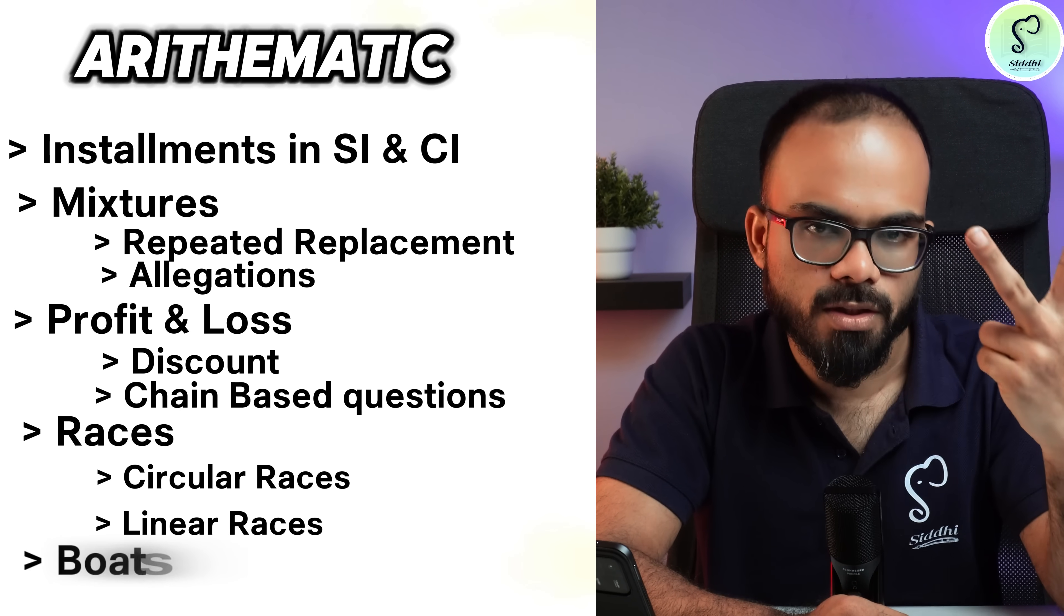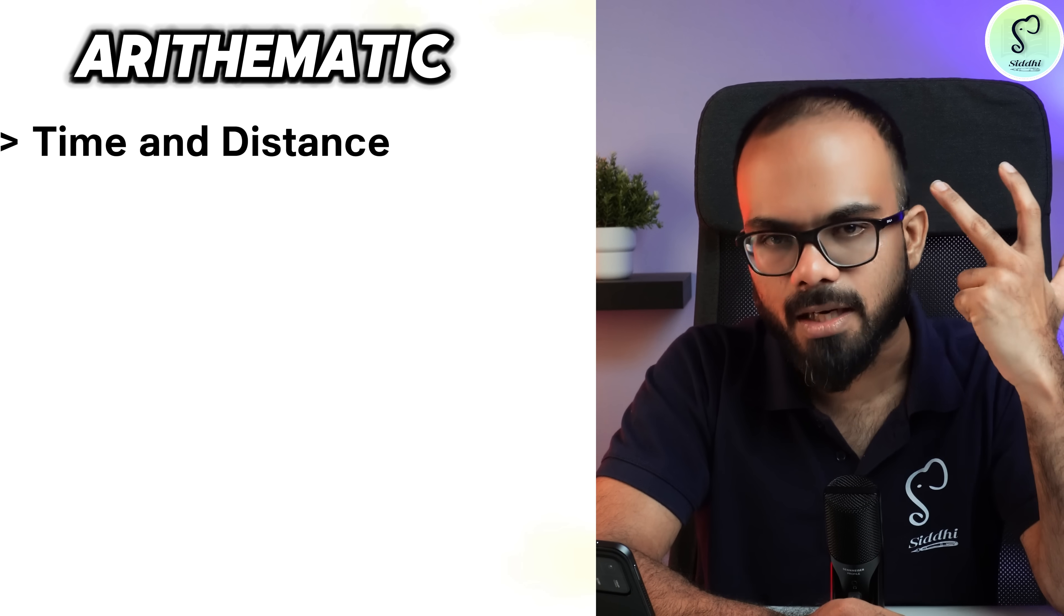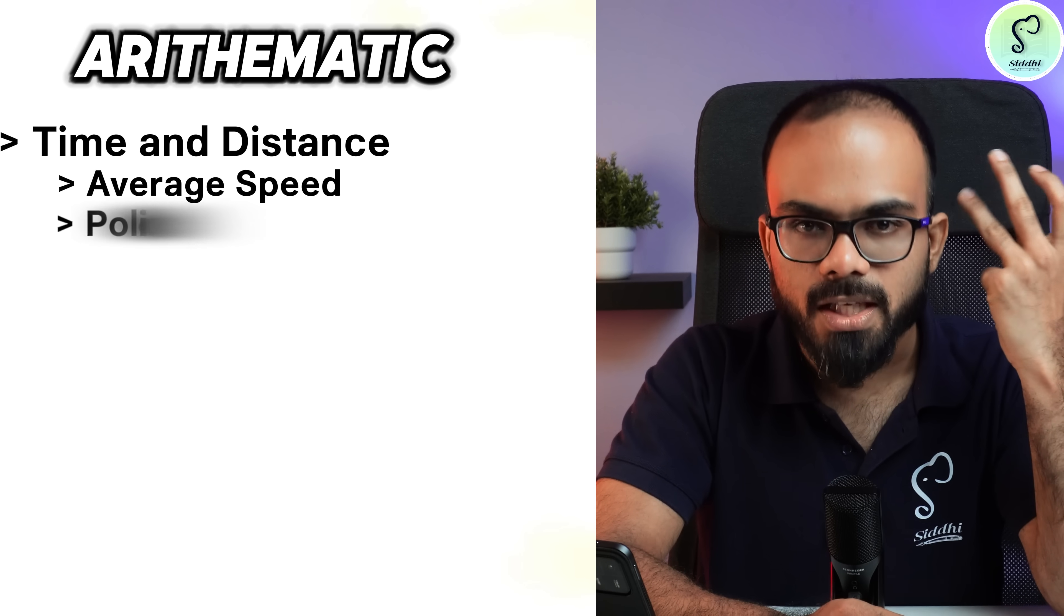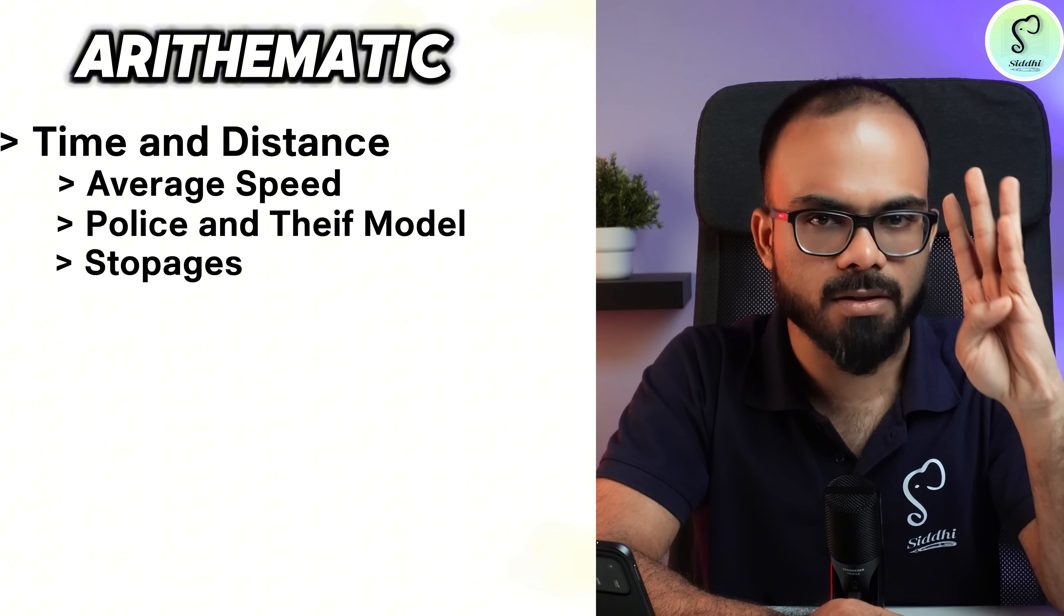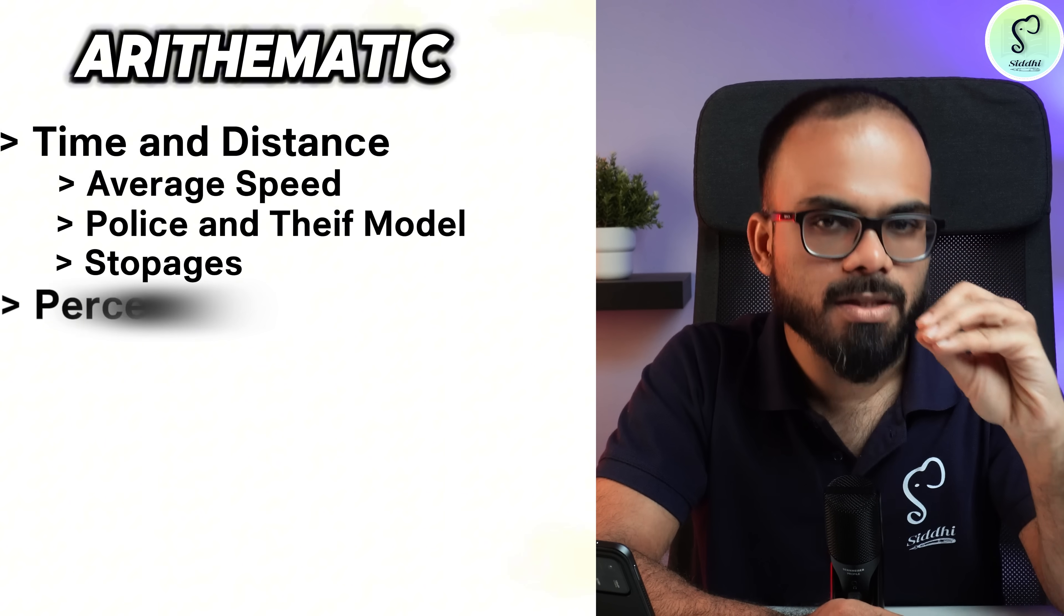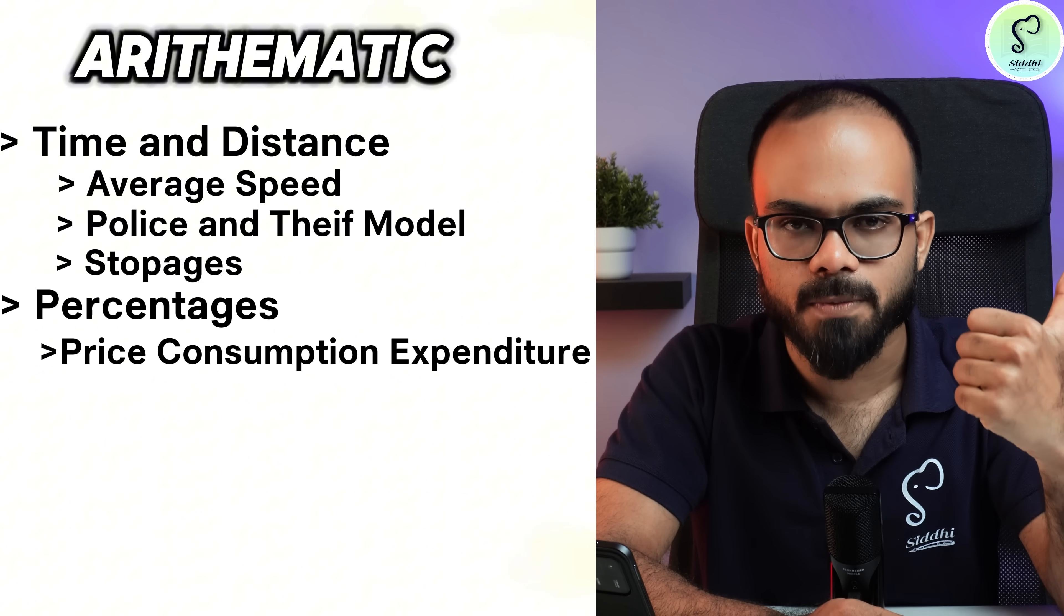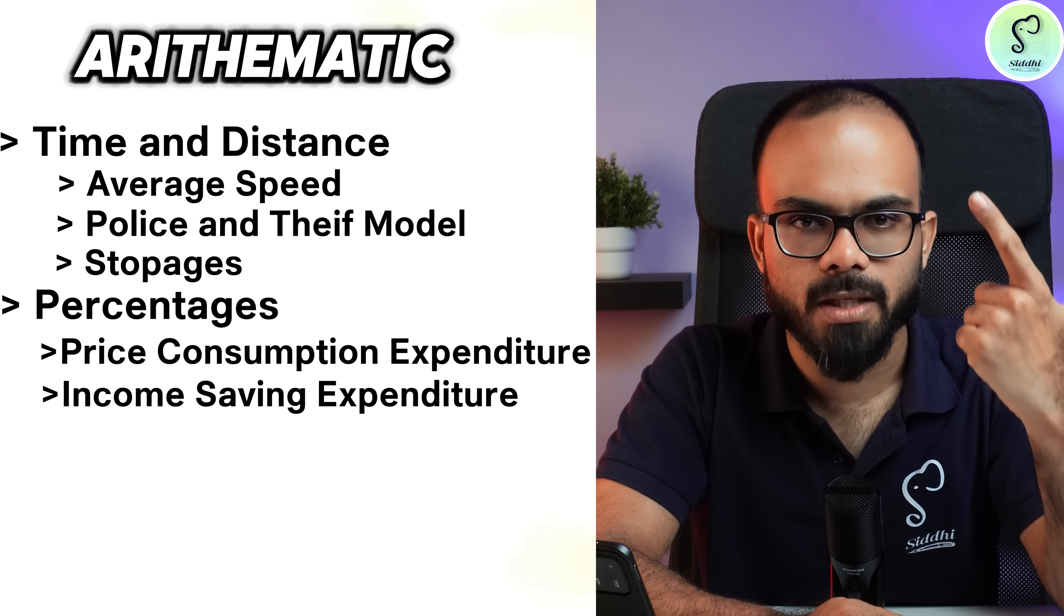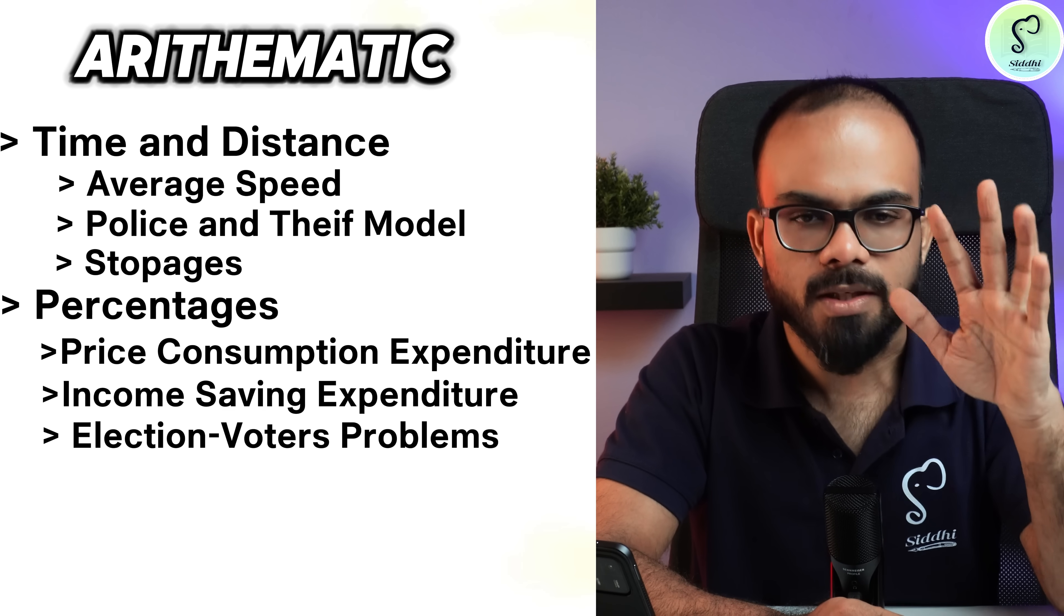Then circular races, linear races, boats. In time and distance, there are questions on average speed, police and thief models, stoppages. These are extremely important. In percentages: price consumption expenditure, income savings and expenditure, election voters problems. These are the most important topics for SSC CGL exams, or for that matter, SSC exams of 2025. Please make sure you are good at all these topics, and after these topics are done, then you can proceed towards any other topics.